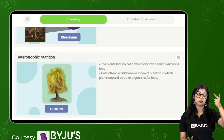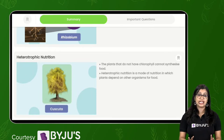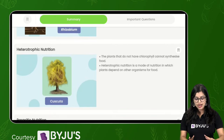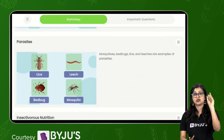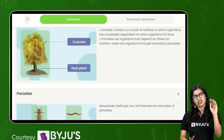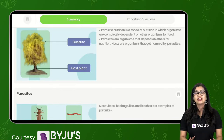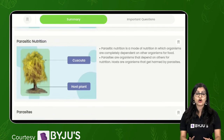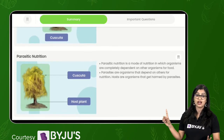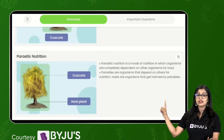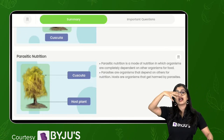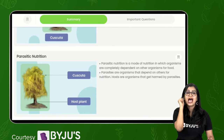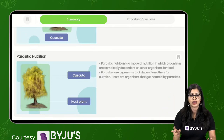In heterotrophic mode of nutrition, organisms cannot make their own food but are dependent on other organisms for food. How many types of heterotrophic mode of nutrition are there? Broadly we have three: parasitic nutrition, saprophytic mode of nutrition, and symbiotic association. Parasitic mode of nutrition - the most common example is cascuta, which is also known as Amar Bel. These organisms cannot prepare their own food and they depend entirely on another organism called the host. Parasites are not only in plants - animals like mosquitoes, leeches, and bed bugs are also parasites.